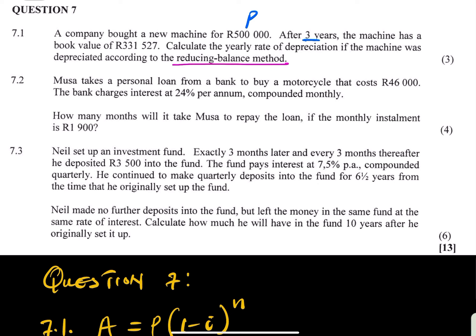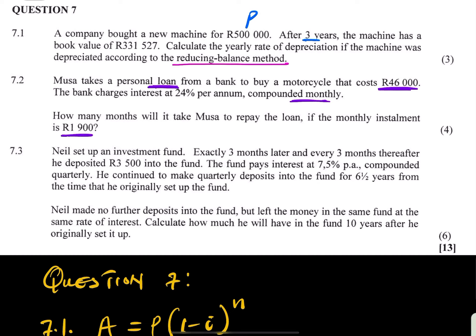Let's check the next question: 7.2. Musa takes a personal loan from a bank to buy a motorcycle that costs 46,000. We are dealing with a loan, so we use the present value annuity. The value of P — the loan — is 46,000. The bank charges interest at 24% per annum compounded monthly. How many months will it take Musa to repay the loan if the monthly installment is 1,900? The installment is your x.